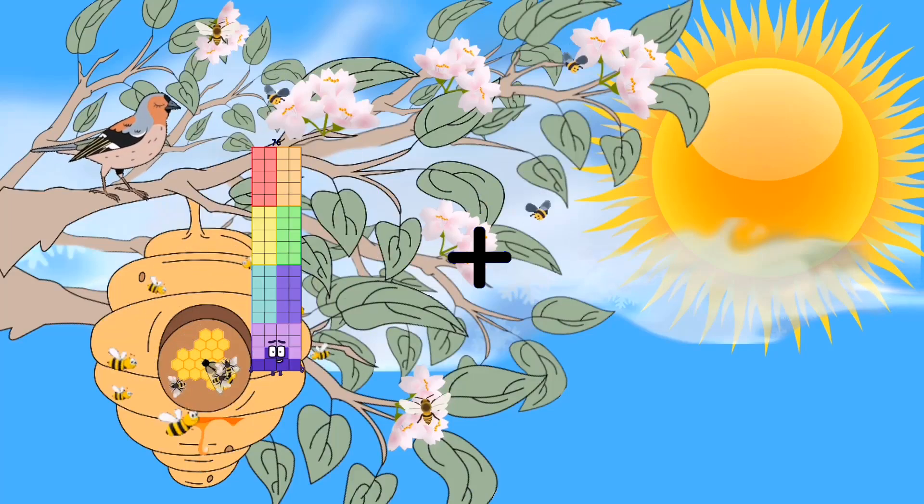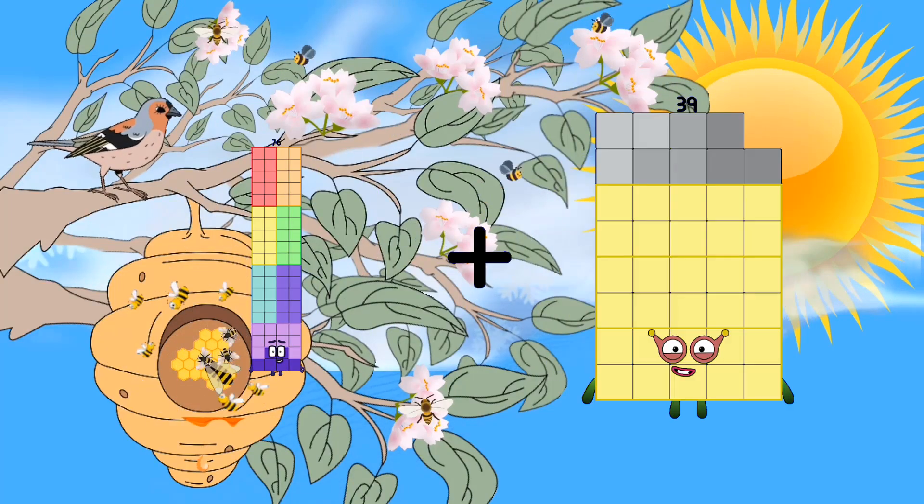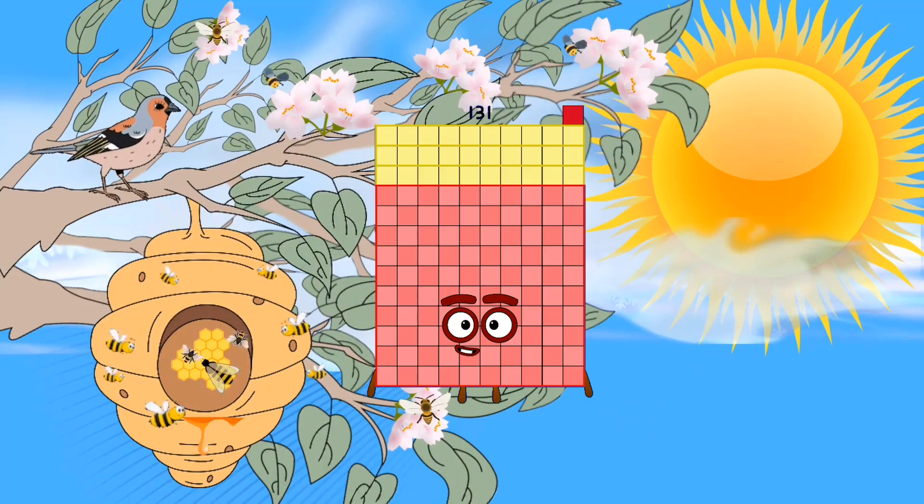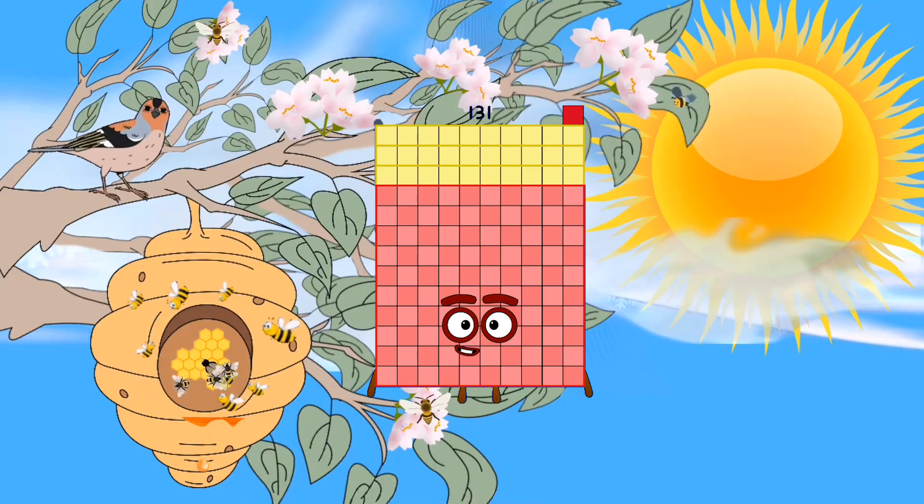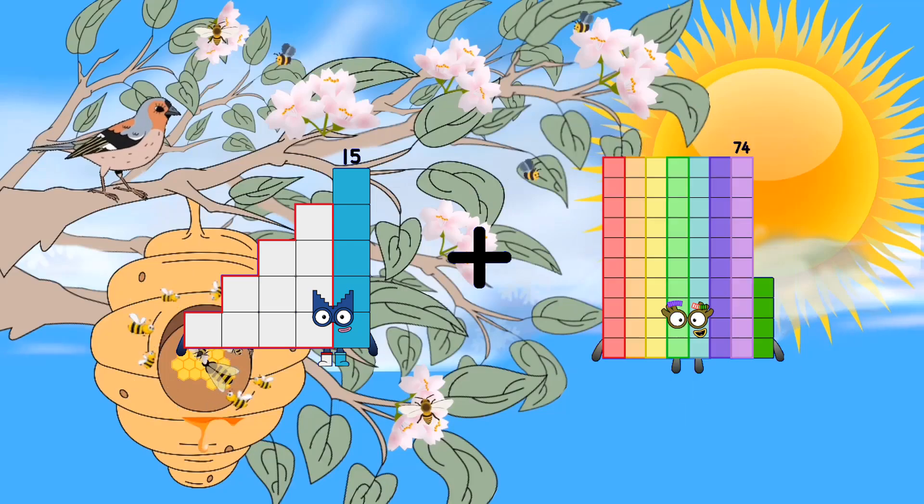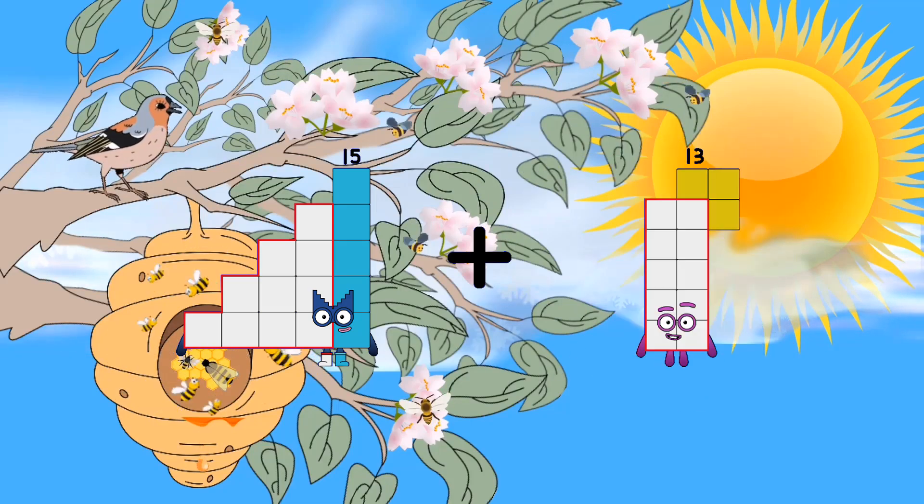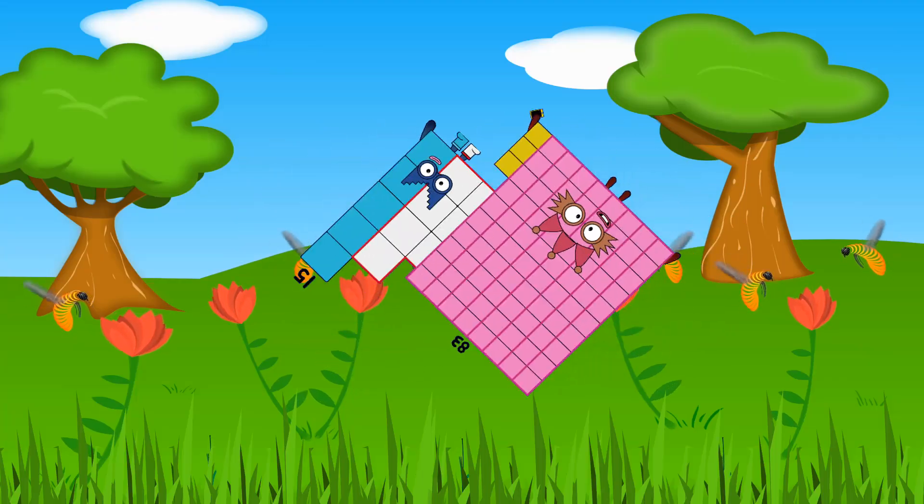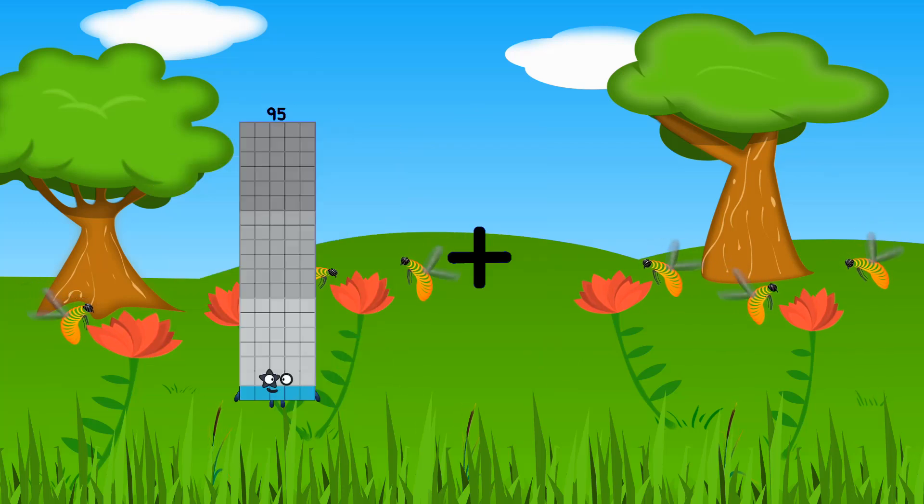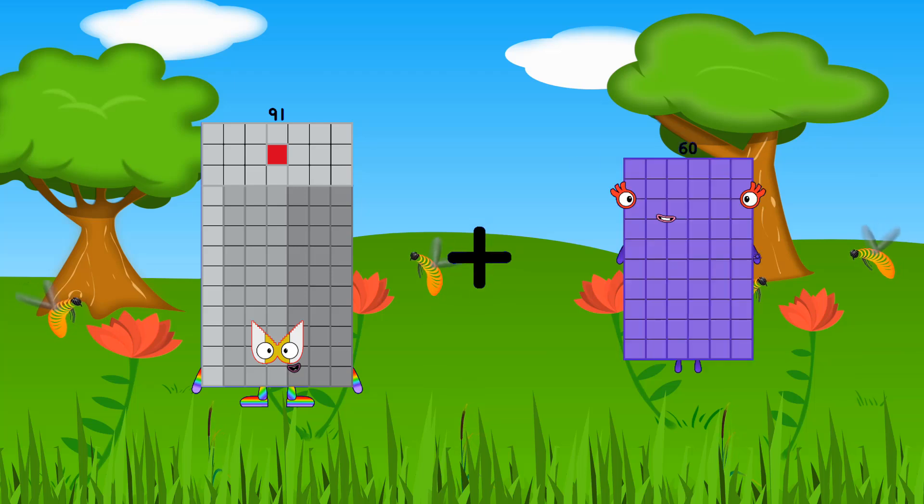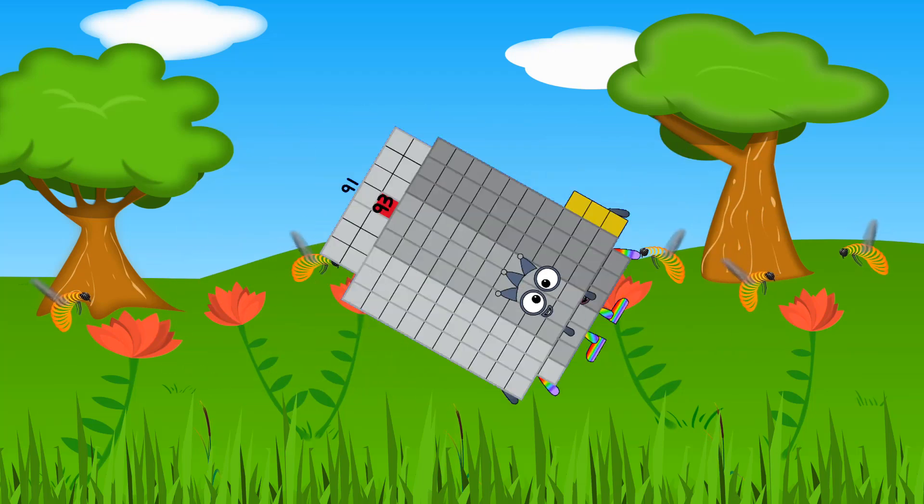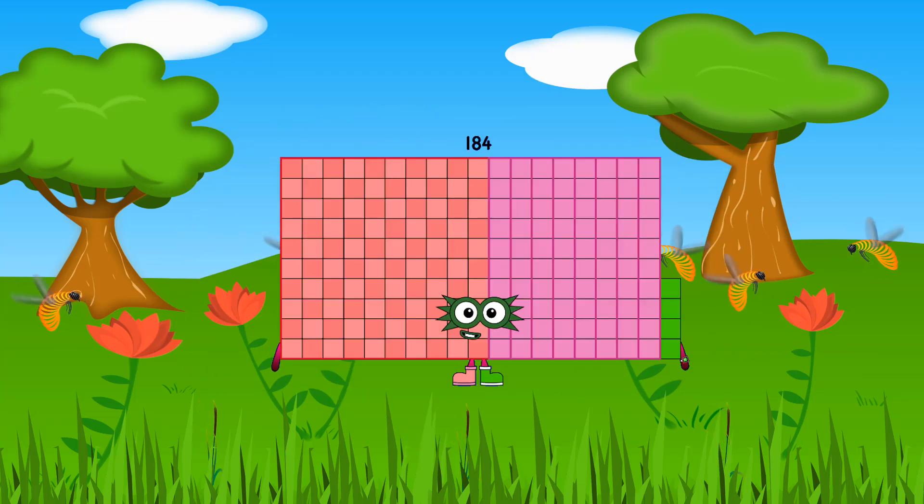Seventy-six plus fifty-five equals one hundred thirty-one. Fifteen plus eighty-three equals ninety-eight. Ninety-one plus ninety-three equals one hundred eighty-four.